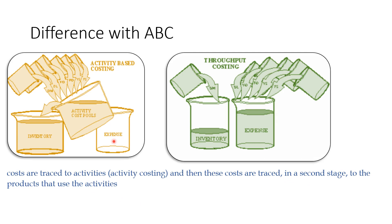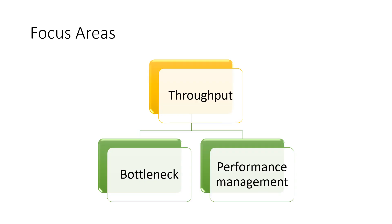In throughput accounting, direct material will be the major cost component; all remaining components will directly become part of expenses. To understand throughput accounting well, you need to know: first, what is the bottleneck and how to identify it, and what benefits or losses can result from it. Second, there is a performance management approach — making decisions, ranking products. An additional topic is how throughput accounting is applied in the service industry. We will discuss bottleneck first, then performance management, and then the service industry application.